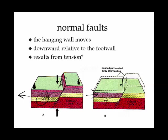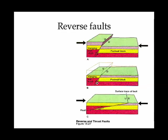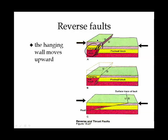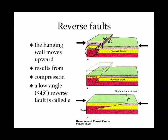The opposite of a normal fault is a reverse fault, which results from compression. The hanging wall in a reverse fault has moved upward relative to the foot wall — it is the up-thrust as opposed to the down-dropped. If a reverse fault is at a very low angle — less than 45 degrees — we call that a thrust fault.